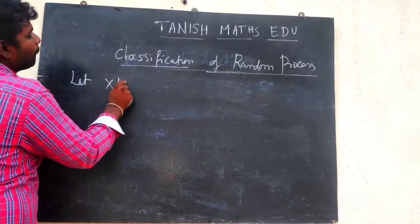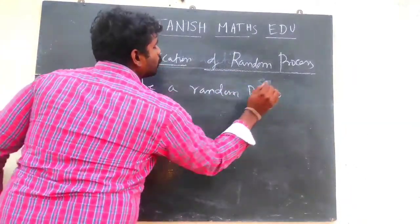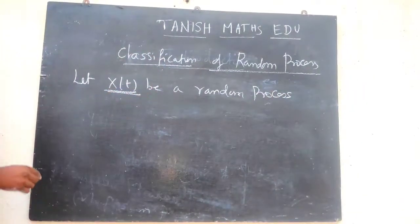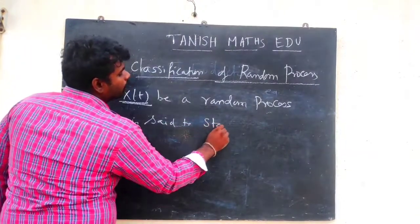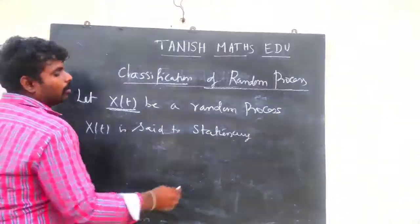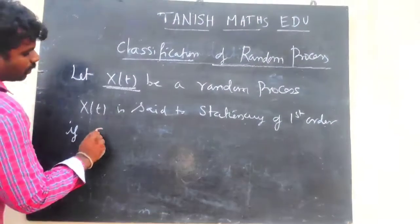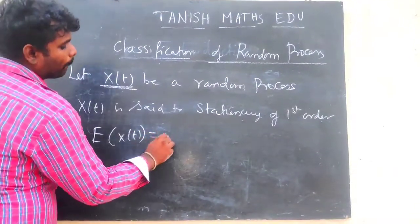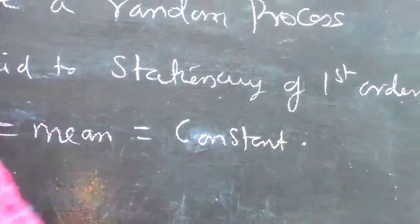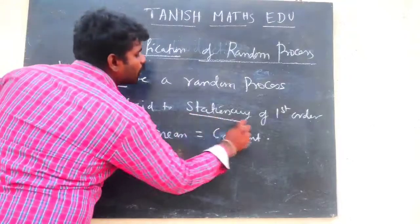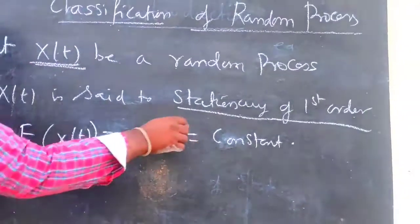Let X(t) be a random process. Then X(t) is said to be stationary of first order if E of X(t), that is the mean, must be constant. This is the condition for stationary of first order — the mean does not depend on time.